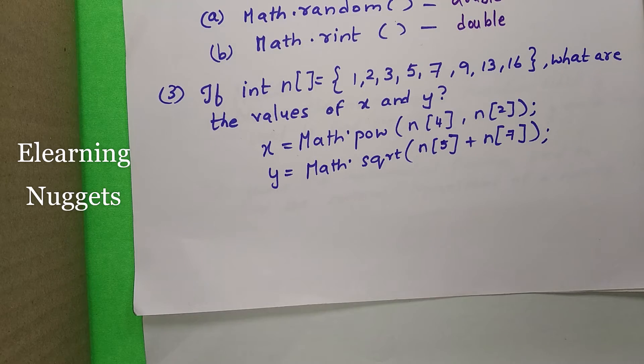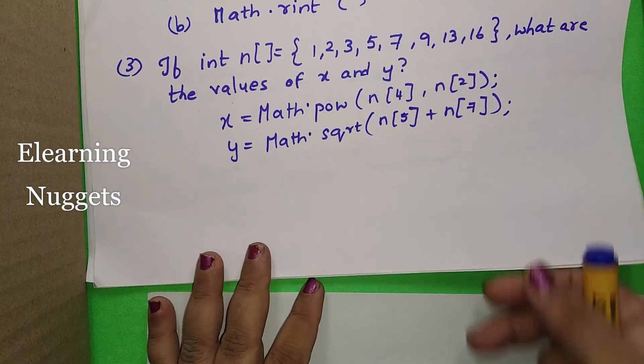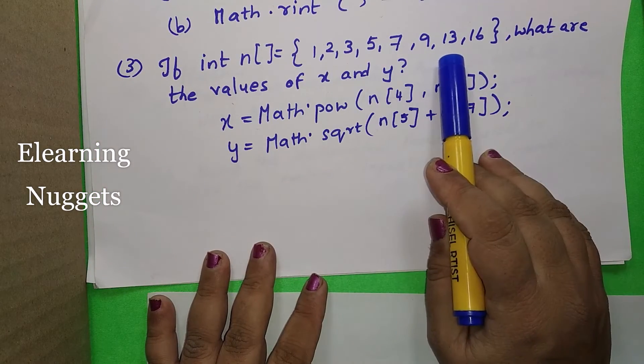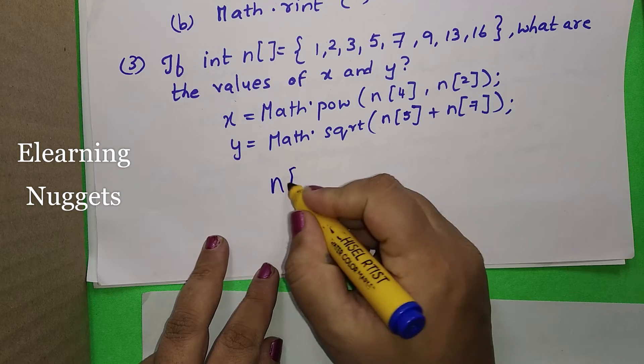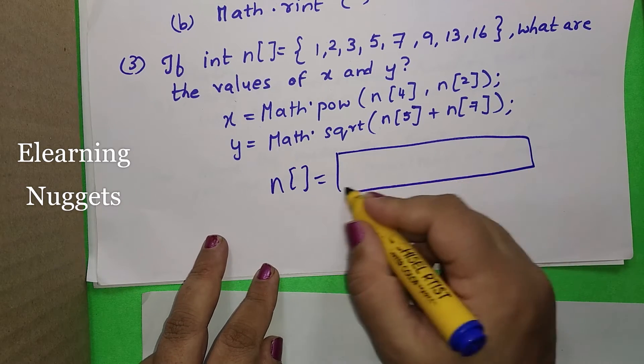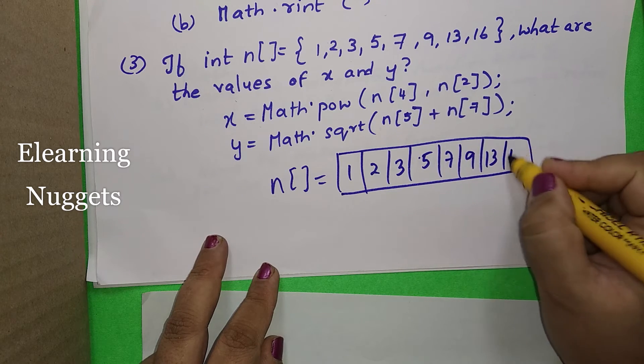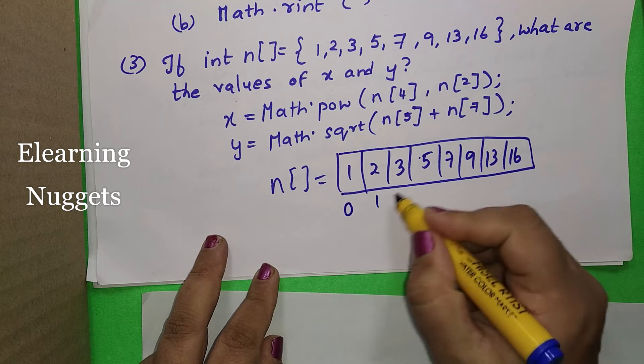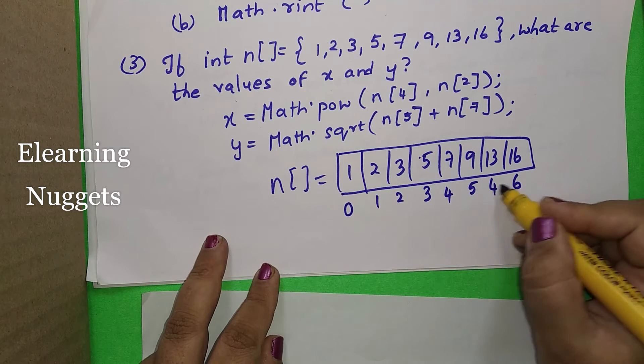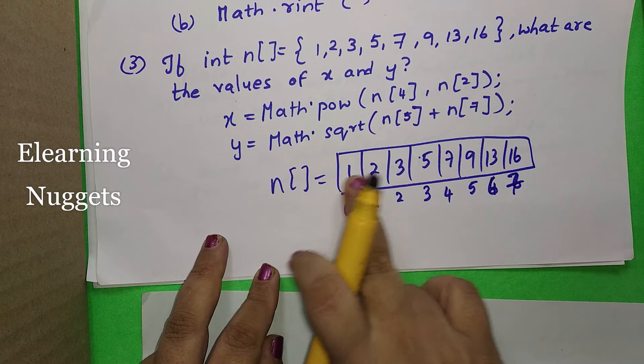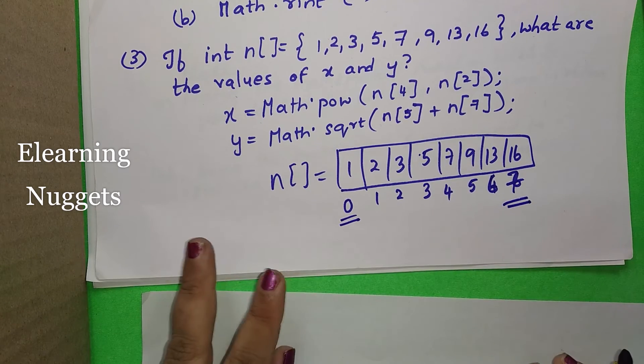Now, let us look at the third problem. The third problem says they have used an array here. If int n is equal to 1, 2, 3, 5, 7, 9, 13 and 16. What is the value of x and y? In this they have used an array of n. We can just draw the array like this. In the exam also you can just do this: 1, 2, 3, 5, 7, 9, 13 and 16. And we all know that array numbers it starts from 0. The index value. You write it like this: 0, 1, 2, 3, 4, 5, 6 and 7. 1, 2, 3, 4, 5, 6, 7, 8 numbers. It starts from 0 and ends up with 7.